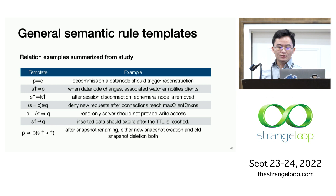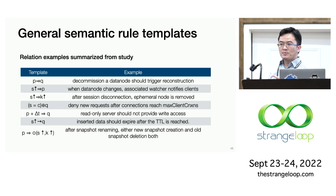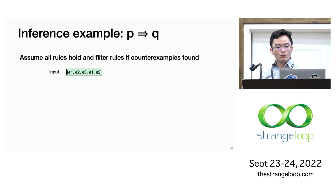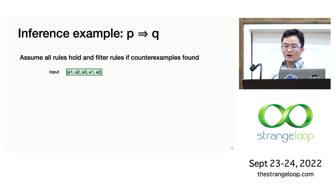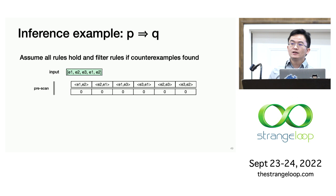To efficiently infer the rules among these collected events, we take a template-driven approach and define a set of general rule templates such as happens-before relationships and atomicity. Each template is parameterized. During the inference step, OathKeeper iterates through all the templates and enumerates the potential instances for each template. We show an example of the inference step for the template P implies Q, meaning for every event P there is a subsequent event Q. We can apply the template to the patched trace, and inferring this template uses a simple counting approach.